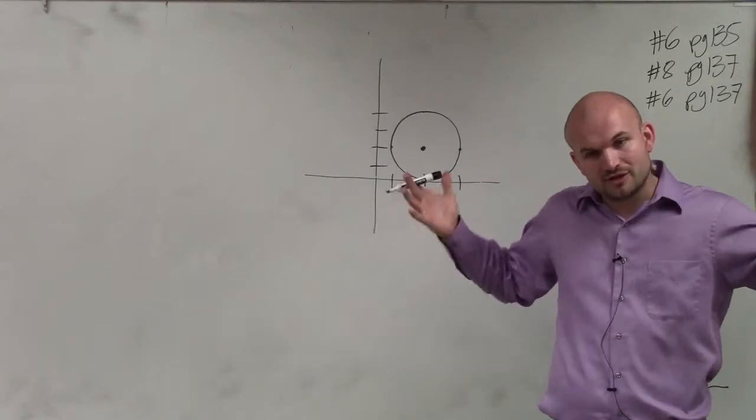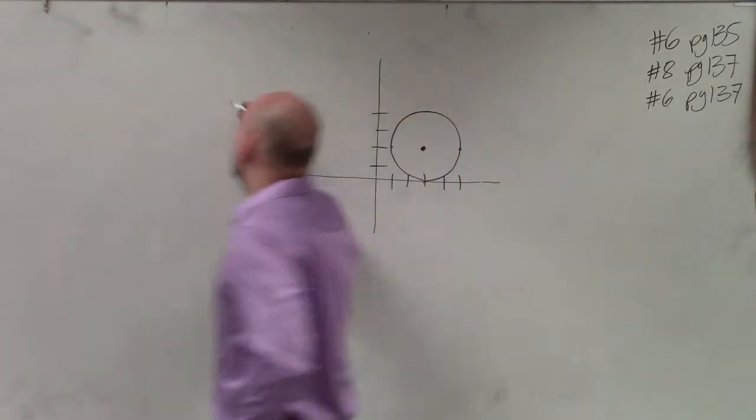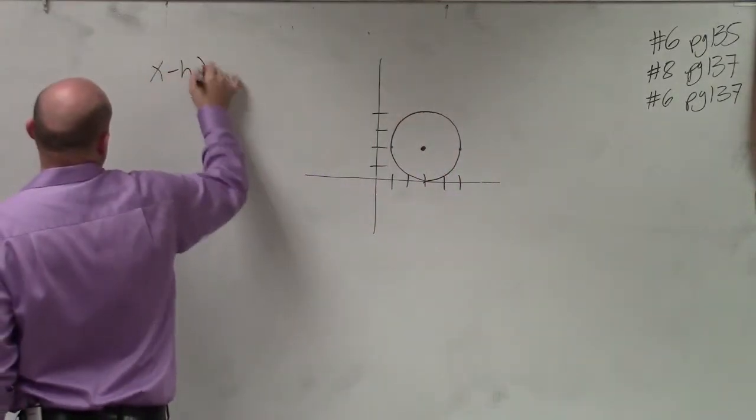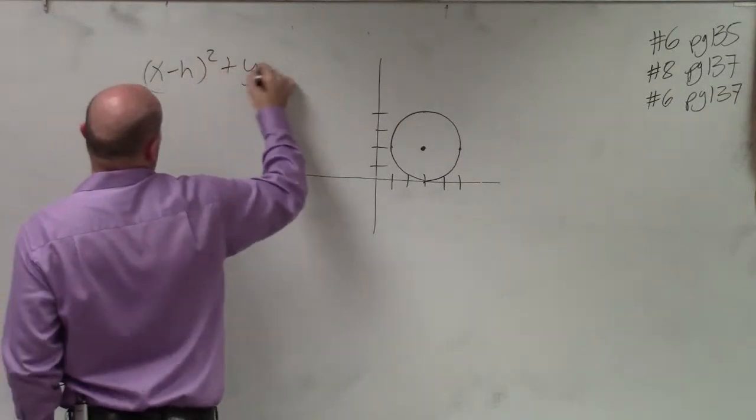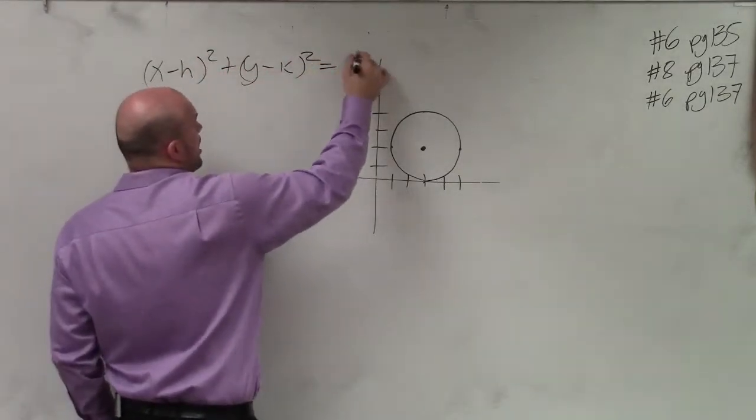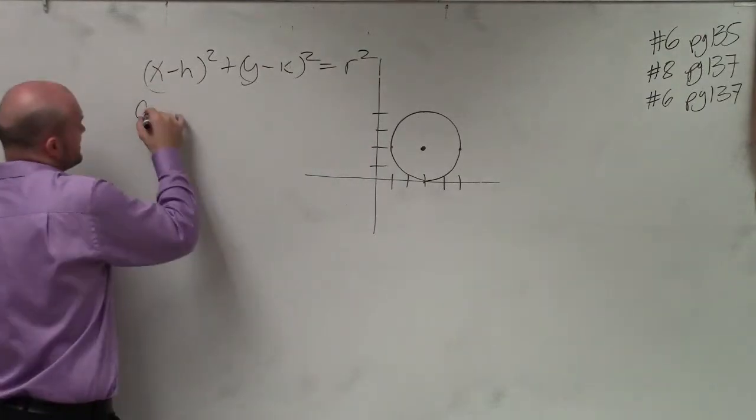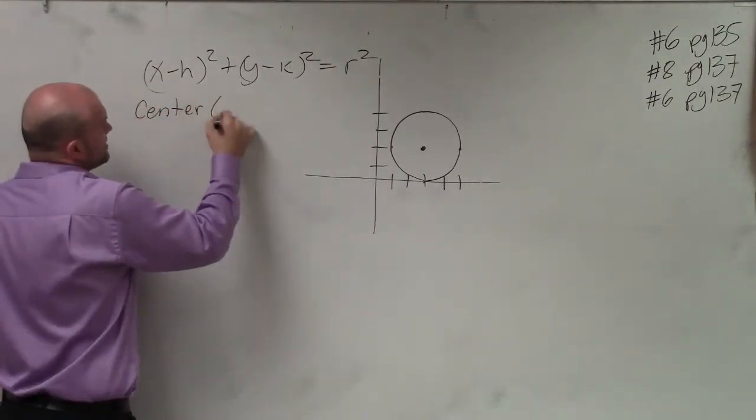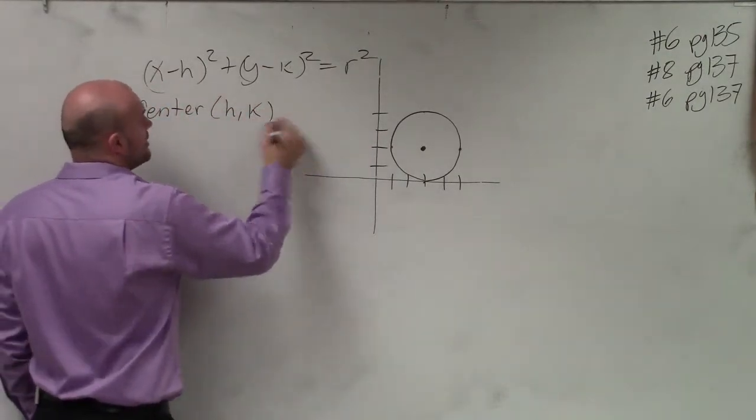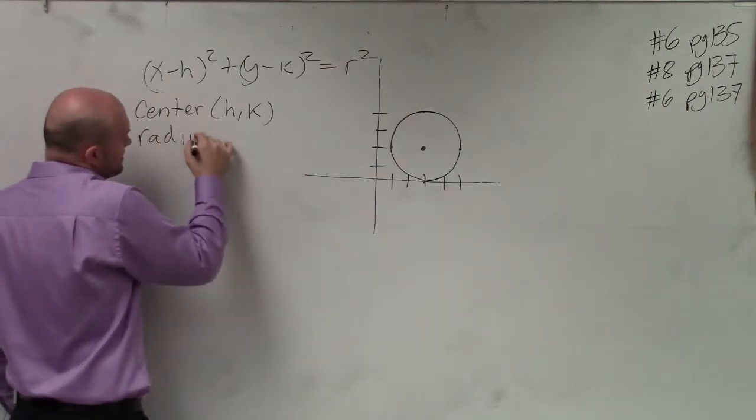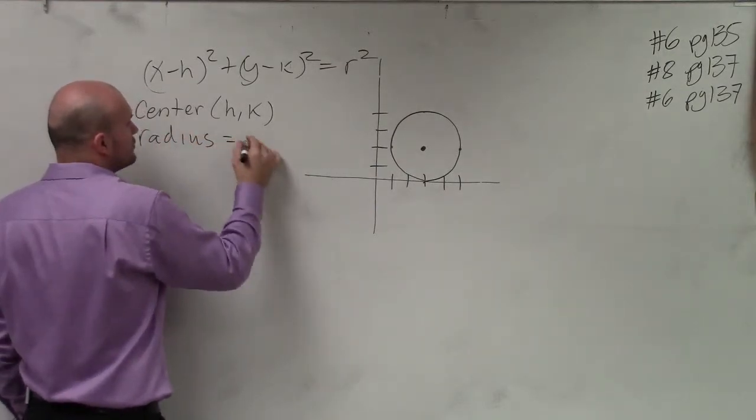You were provided the equation of the circle, which we talked about. Again, the equation of the circle, x minus h squared plus y minus k squared equals r squared, where the center is in the form of h comma k, and the radius is equal to r.